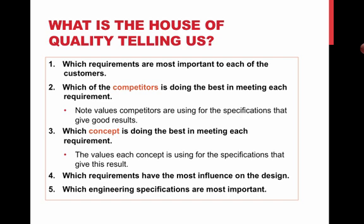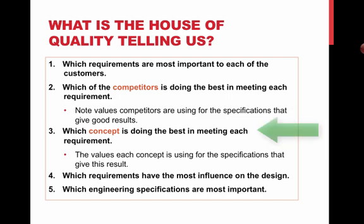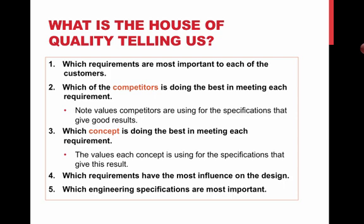So what is the House of Quality telling us? It tells us which customer requirements are most important to each customer, which competitors are doing best at meeting requirements, and the specification values competitors use that give good results — as well as what's not working. It tells us which concepts best meet customer requirements, which requirements have the most influence on our design, and which engineering specifications are controlling the design to a high degree. It's a very powerful tool with a lot of information embedded in it. There's significant work involved, but the payoff in insight to your design is really big.